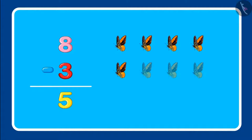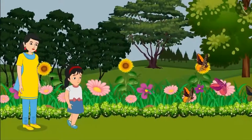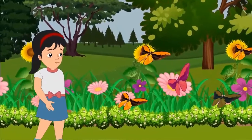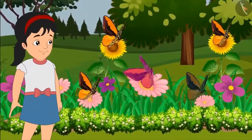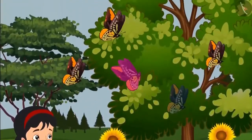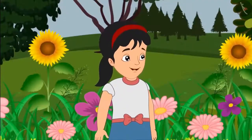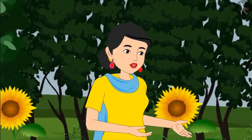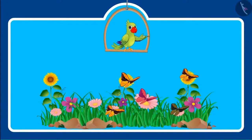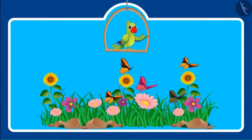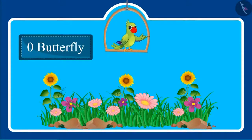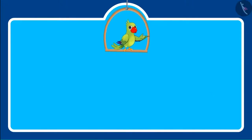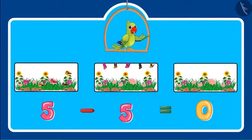Now let's go back to Pinky and her mother in the garden. Pinky goes a little more close to the flowers to see the remaining 5 butterflies more closely. As soon as she goes near the flowers, all 5 butterflies fly away. Oh, Mommy! All 5 butterflies flew away. Children, can you tell me if out of the 5 butterflies, all 5 flew away, how many are left? There are not even a single butterfly left — 0 butterflies are left. If we subtract 5 from 5, then 0 is left.